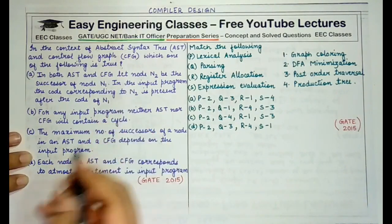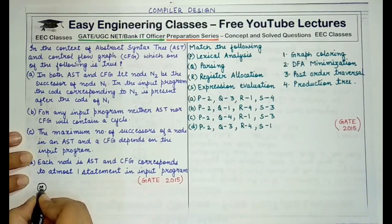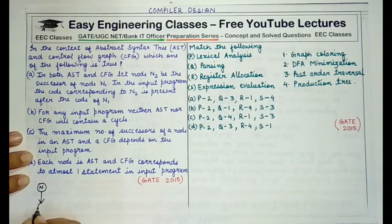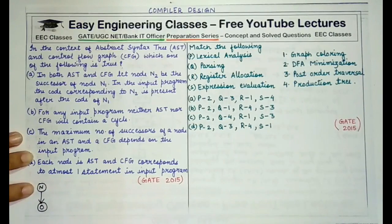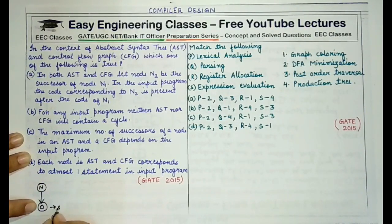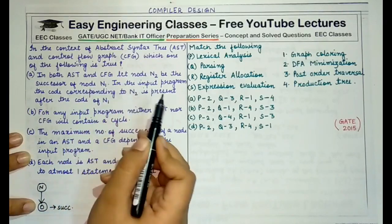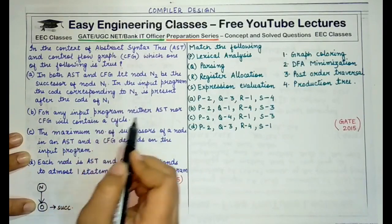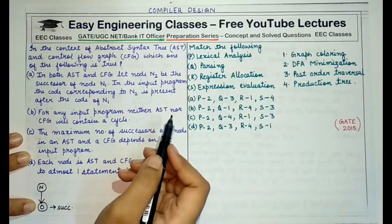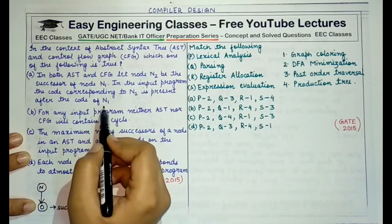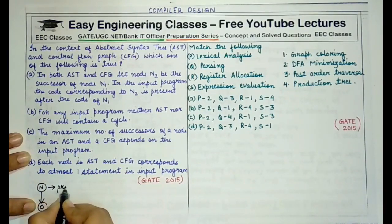A successor of a node is any node that has a direct edge from a particular previous node. So if there is an edge from n to o, then o is the successor of n. However, it is not always true that the successor node's code will be written after the code of the predecessor node.